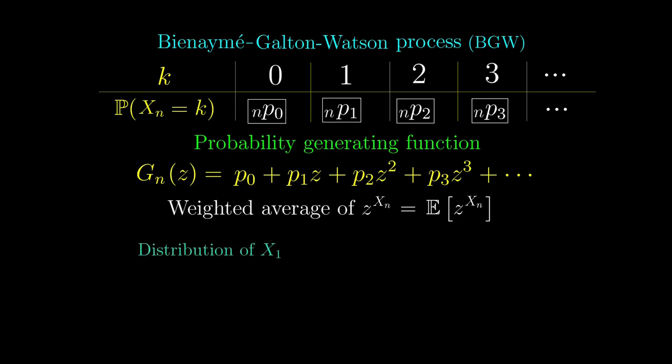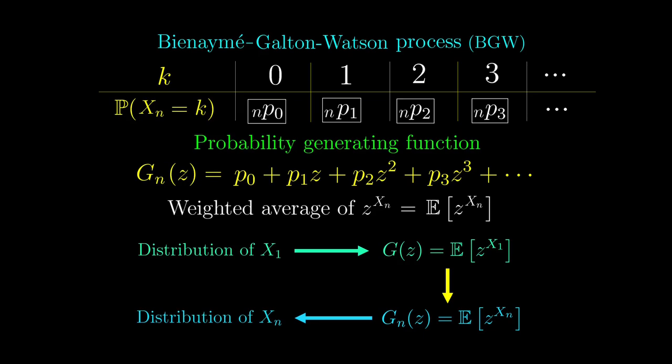So basically, if we are given the offspring distribution, then we can encode it in the generating function, which can be written in terms of the weighted averages. Then we will find some way to find the generating function for xn, which we can then decode to find the distribution of xn, which is exactly what we want. This is a much easier approach than just directly going from the offspring distribution.